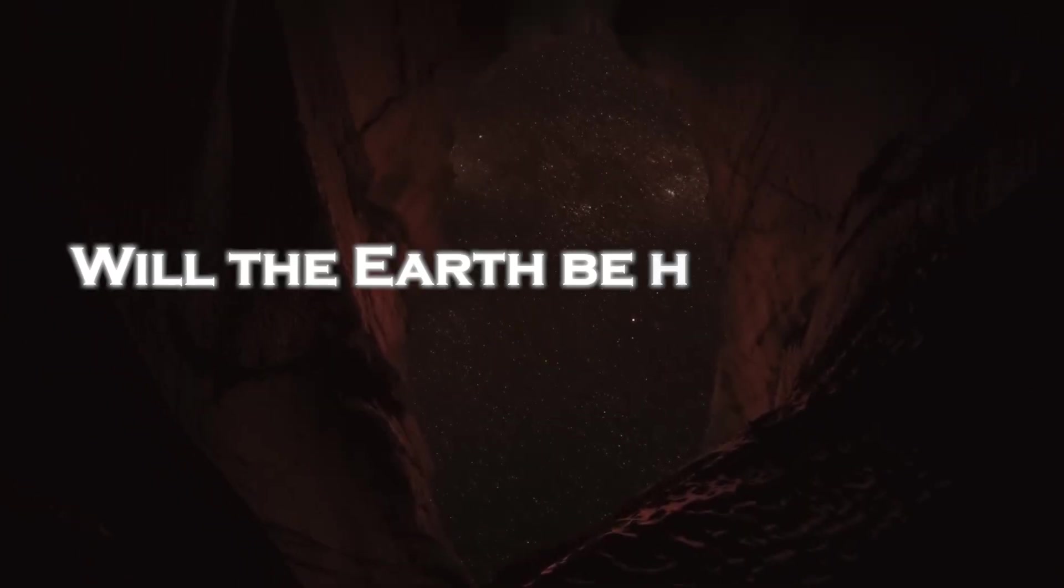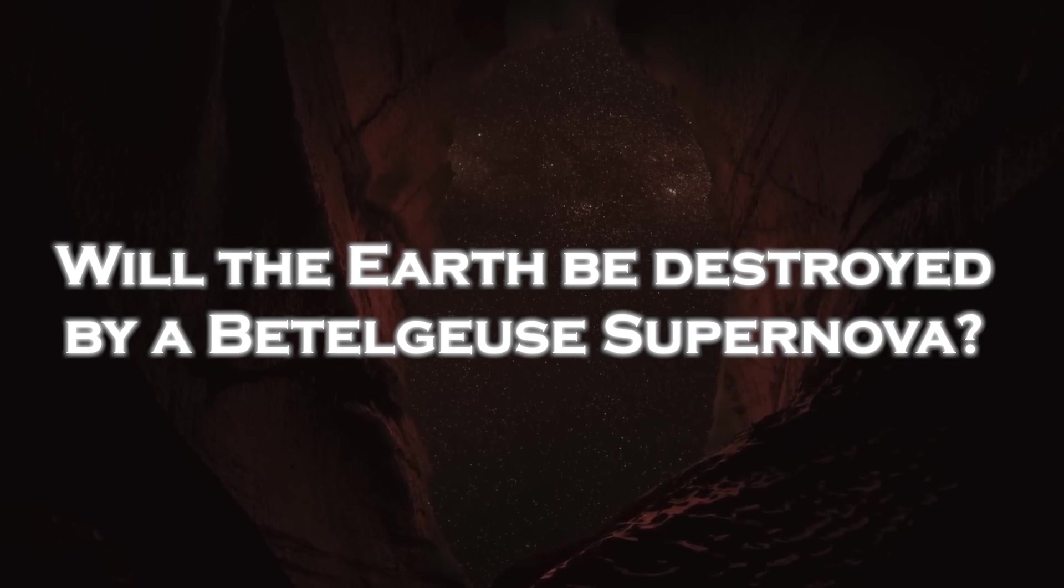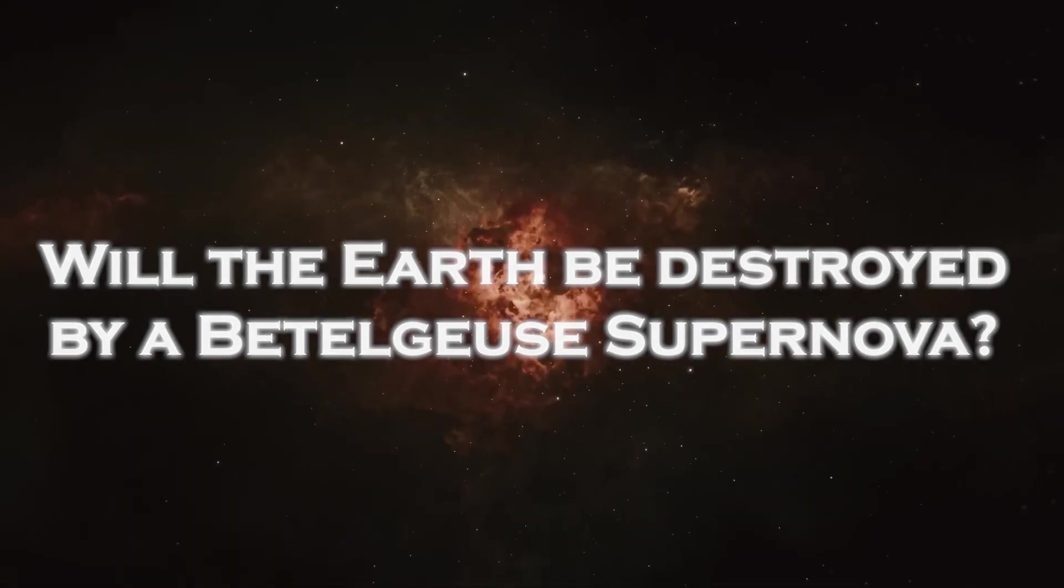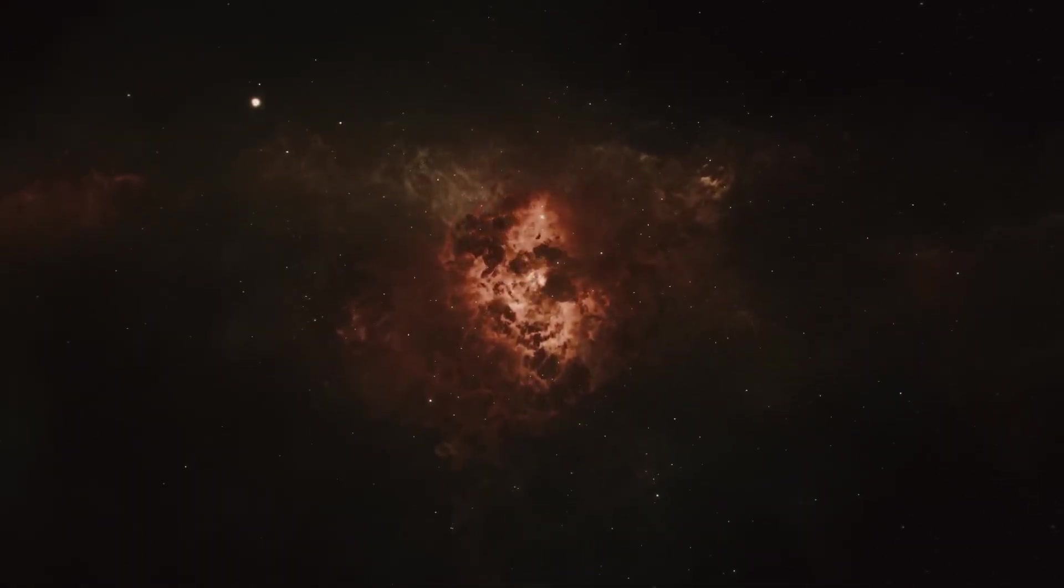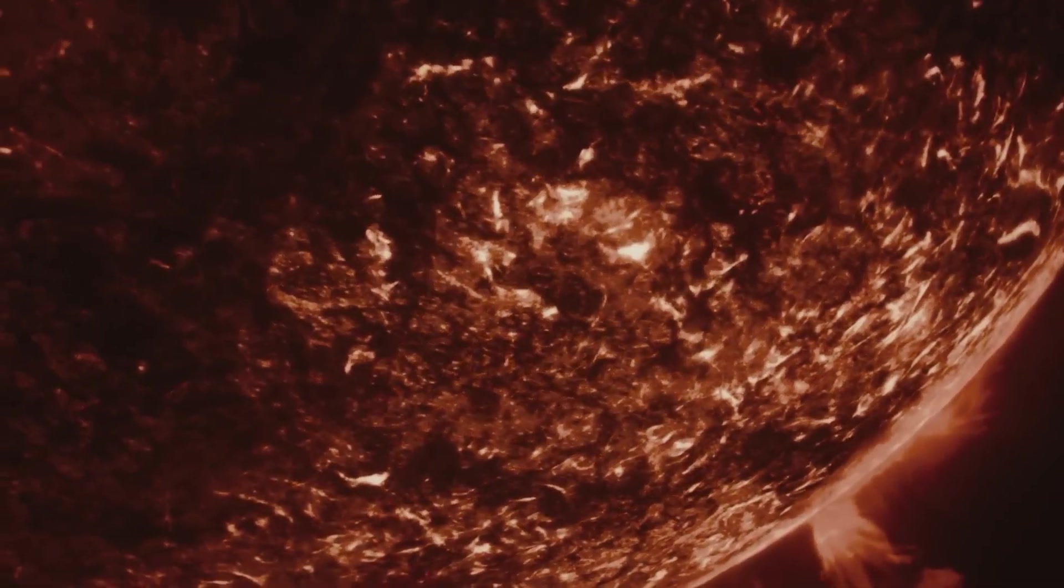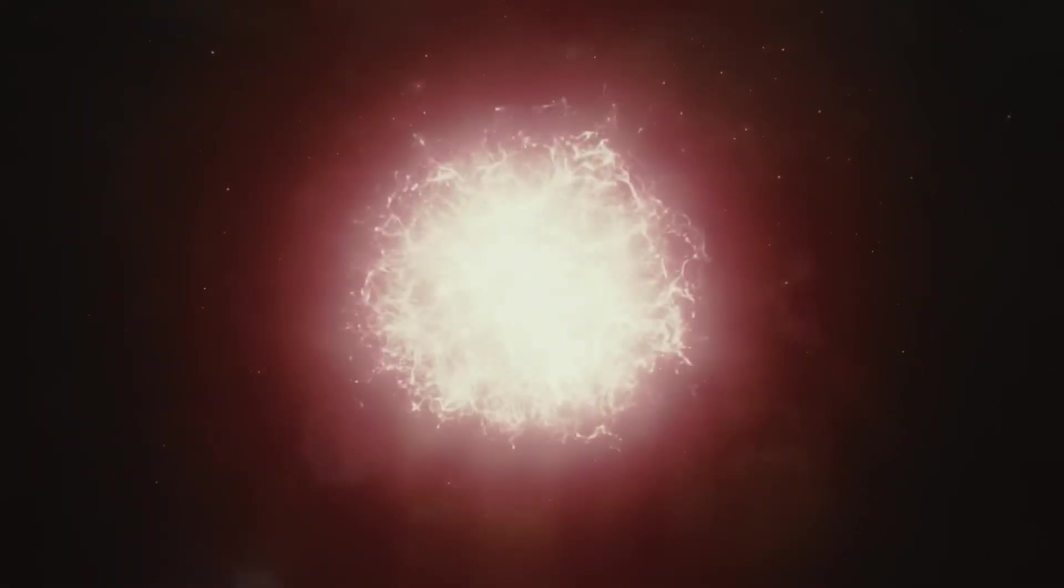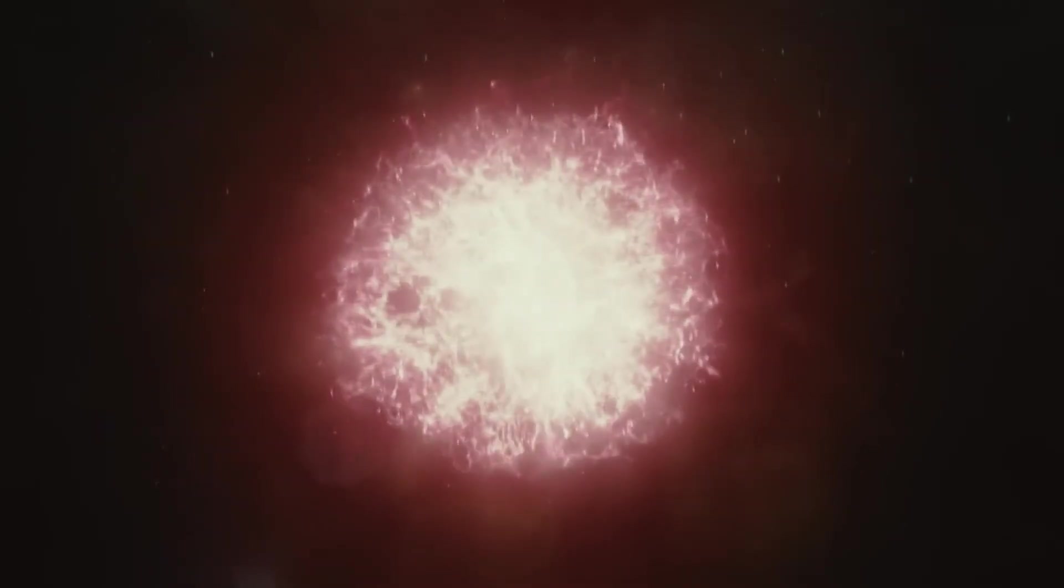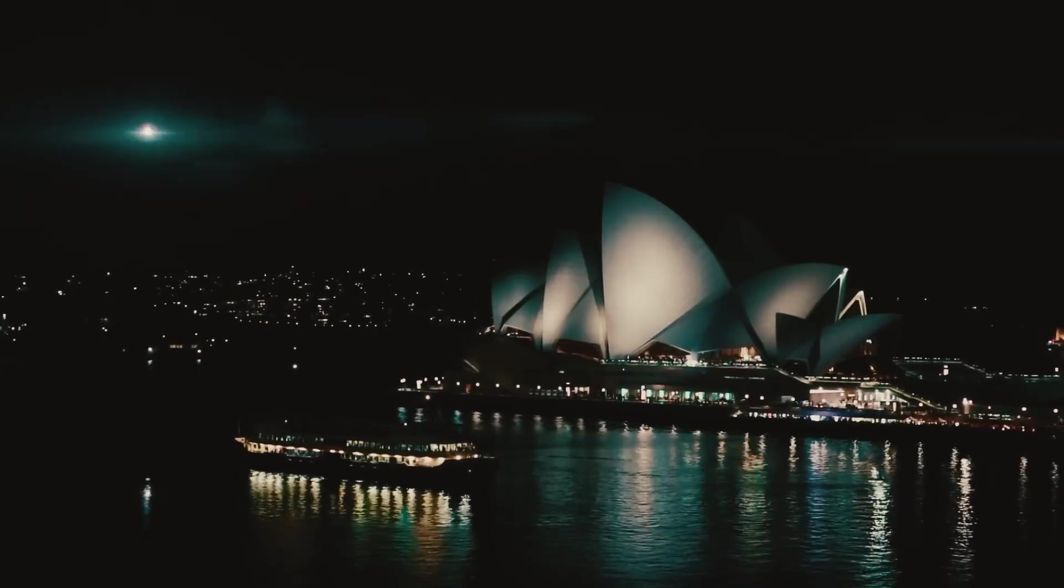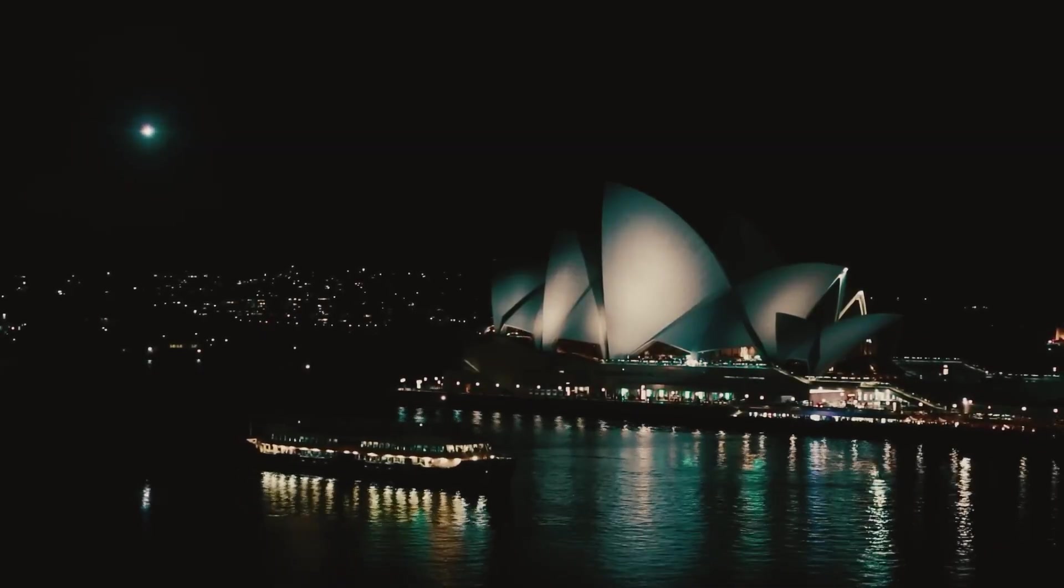Will the Earth be destroyed by a Betelgeuse supernova? The star will be the second brightest object in our sky after the sun when the supernova occurs, despite being away from us. Betelgeuse, which shines brighter than a full moon, will be visible during the day. It will be so dazzling for a few weeks at the peak of the explosion that shadows will even be cast in pitch darkness.